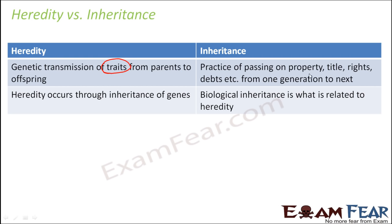When you talk about inheritance, it is the practice of passing on property, title, rights, debts, etc. from one generation to the next. For example, suppose a great-grandmother had five houses, two farmhouses, and a lot of property. When that person passes away, all their property by default goes to their kids. When those kids pass away, all the property goes on to their kids. So the property keeps on passing from one generation to the other — that is known as inheritance.